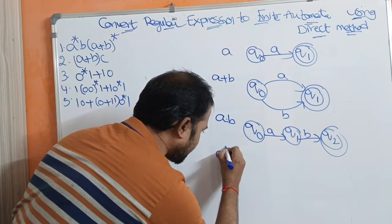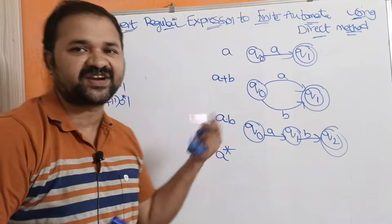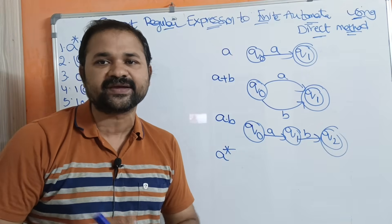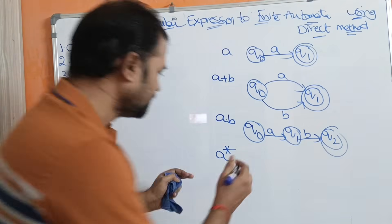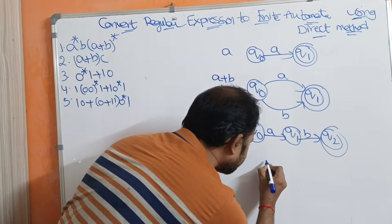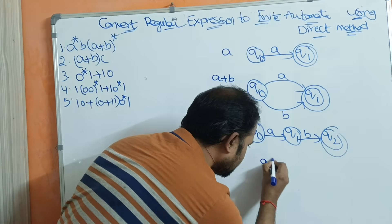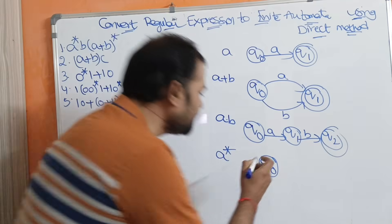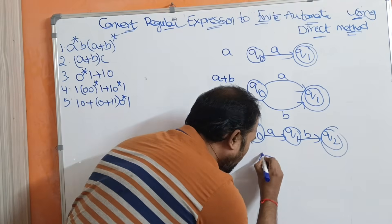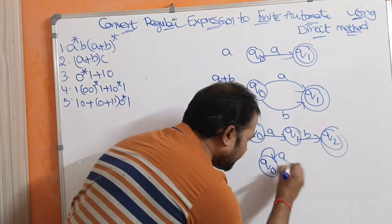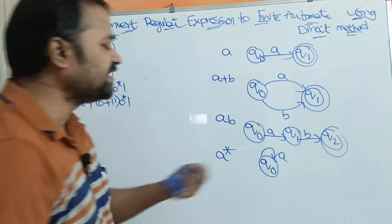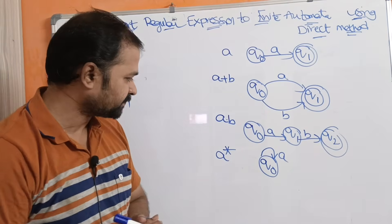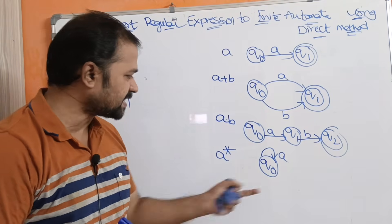Now let us see the regular expression A star. Star stands for Kleene closure — any number of A's including zero. Let the state be Q0. Since star means any number of A's, we simply write Q0 as the final state with a self-loop on A. This is the finite automata for A star.